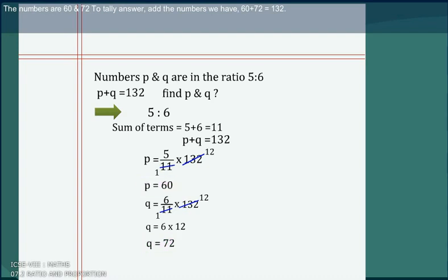To tally answer, add the numbers we have. 60 plus 72 is equal to 132.